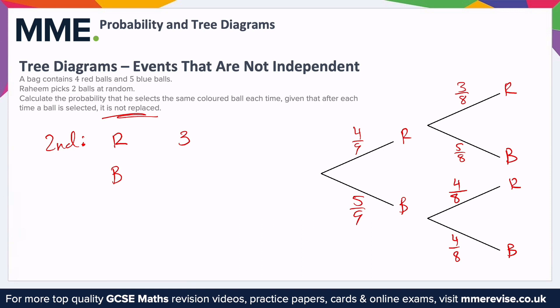We're looking at selecting the same colour twice: red then red, or blue then blue. A red then a red would be four ninths times three eighths. To check: we want red and a red, so it's the AND rule — we're multiplying. Four times three is twelve; nine times eight is seventy-two, giving 12 over 72. You could simplify this fraction, but there's no need to.